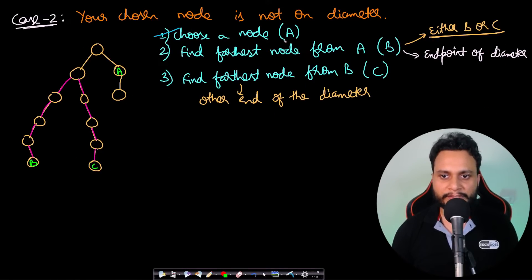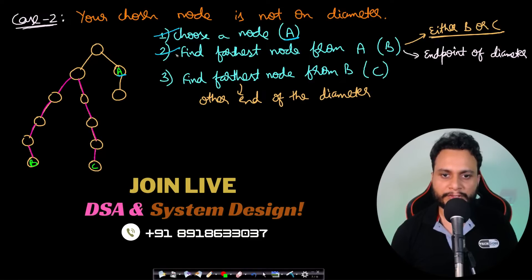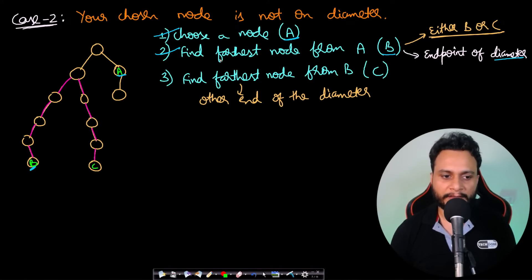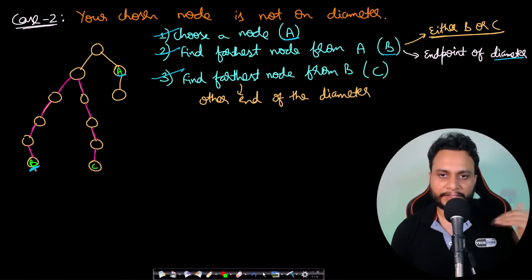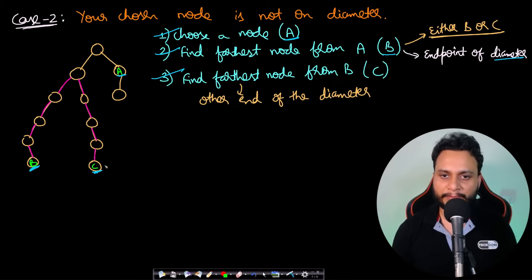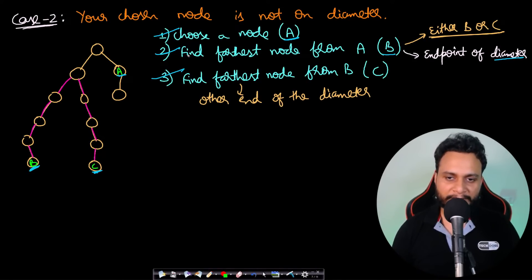In case 2, the randomly chosen node a may not be on the diameter. Finding the farthest node from a using BFS will always land on an endpoint of the diameter (say b). Then doing BFS from b and finding the farthest node always gives the other endpoint c. The number of levels between b and c equals the diameter, because the diameter is by definition the longest path between any two nodes.